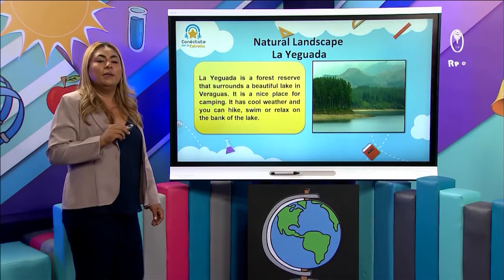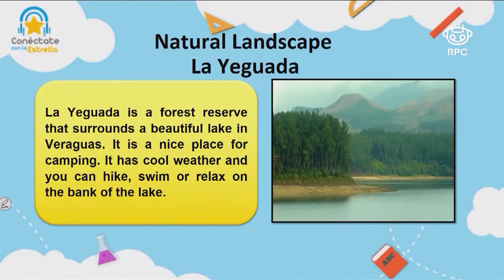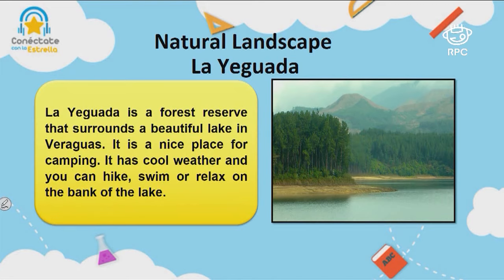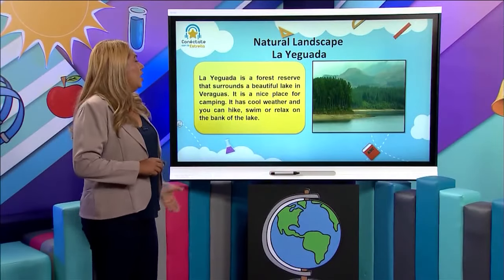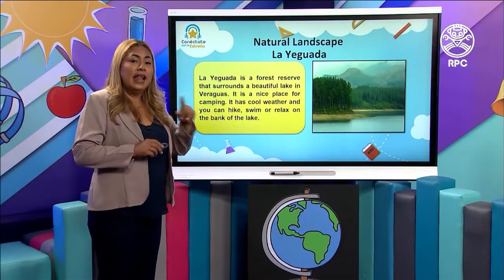So let's learn a little more about natural landscapes and let's start with La Lleguada. Do you know where La Lleguada is? It is in Veraguas province. La Lleguada is a forest reserve that surrounds a beautiful lake in Veraguas. It's a nice place for camping. It has cool weather and you can hike, swim, or relax on the bank of the lake. What a beautiful place — and this is in our country.